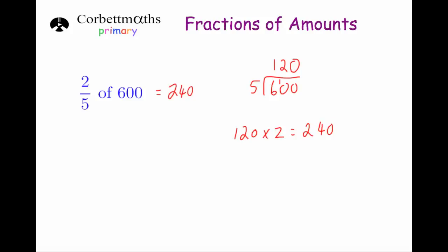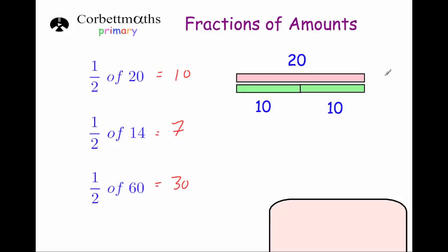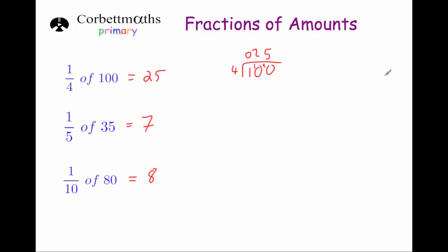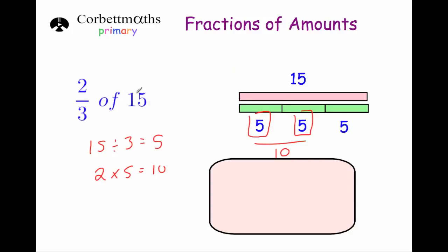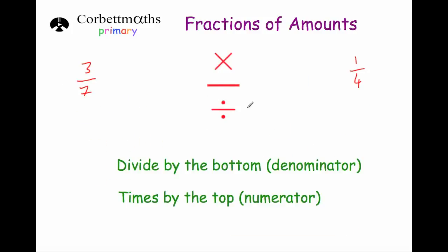So if you want to work out a simple fraction like a half, a third, a quarter, or a fifth, you just divide by the number on the bottom of the fraction. If you want a fraction of a number — for instance, 3 sevenths or 2 thirds — you just divide by the number on the bottom of the fraction and then times by the number on the top of the fraction. And that's it.